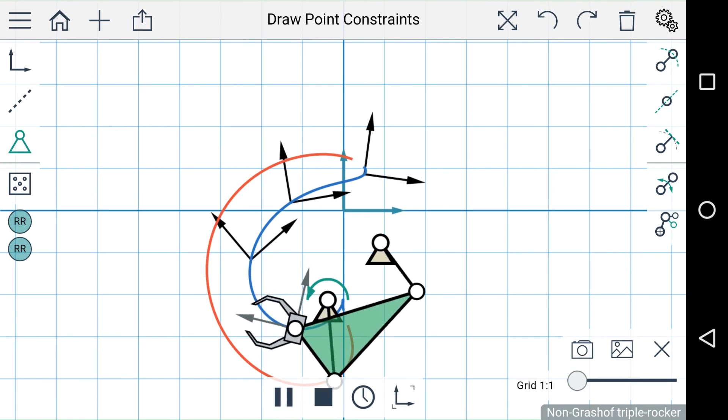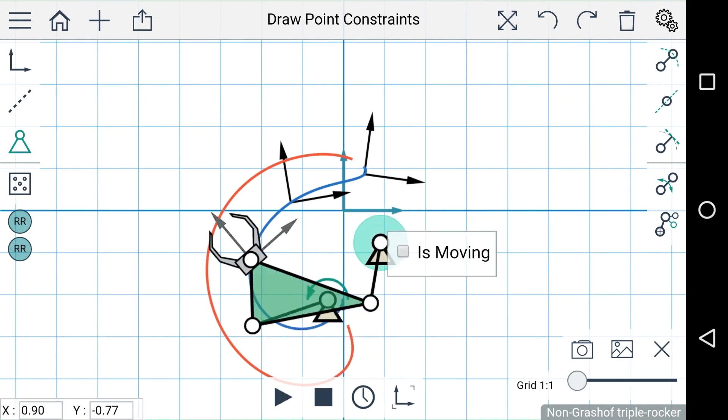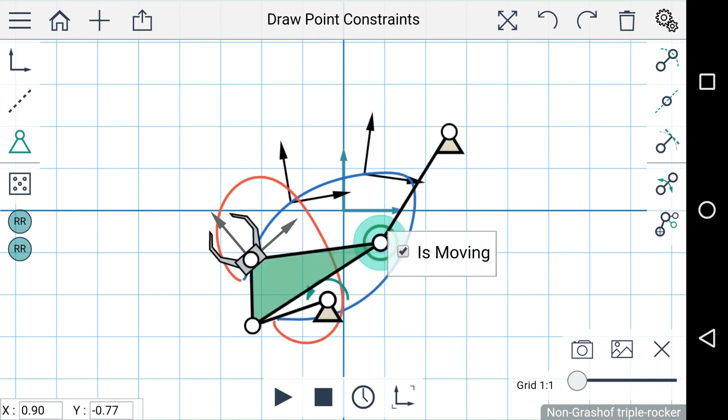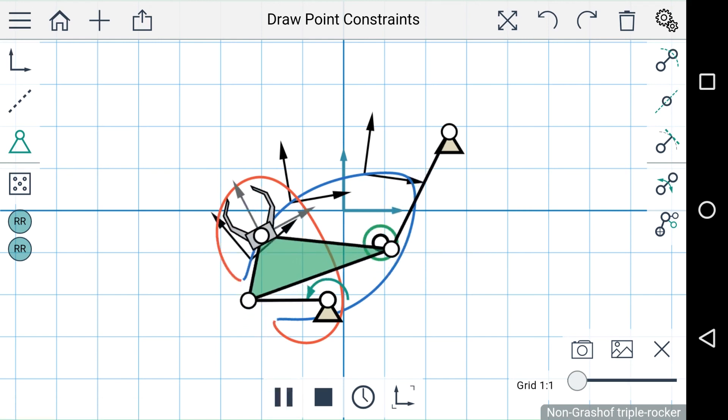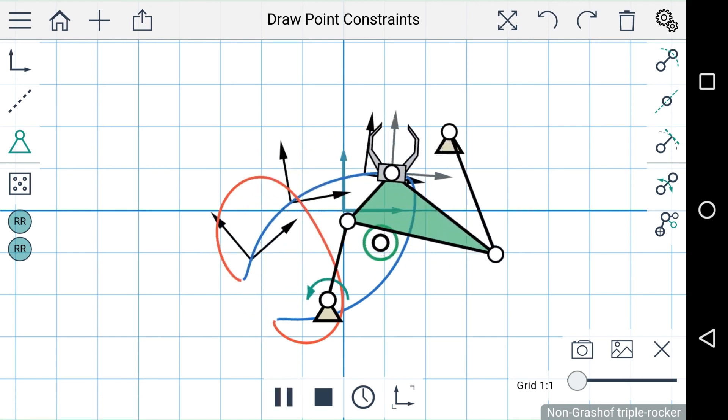Now if you'd like you can actually modify these point constraints. If you double tap on one of them a little dialog pops up that says is moving. Now if I check this box you can see that the linkage has changed so that now the moving pivot actually passes through this point instead of the ground pivot.